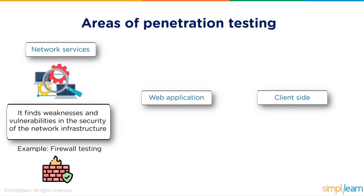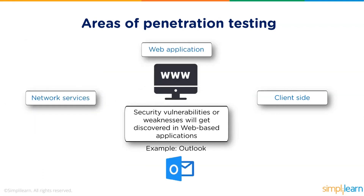Penetration testing can be performed across several areas. Network services testing finds vulnerabilities and weaknesses in the security of network infrastructure — switches, routers, firewalls — which if misconfigured leave vulnerabilities that could allow an attacker to gain access to the network. Web application testing targets software deployed over a web server and made available over the intranet or internet, such as websites and applications like Facebook, attempting to bypass authentication, access databases, or leak information.